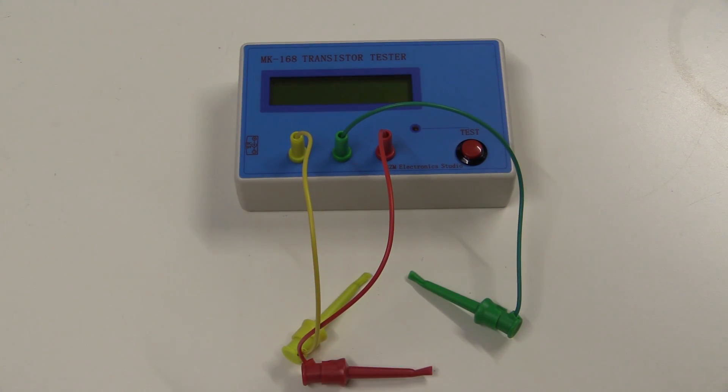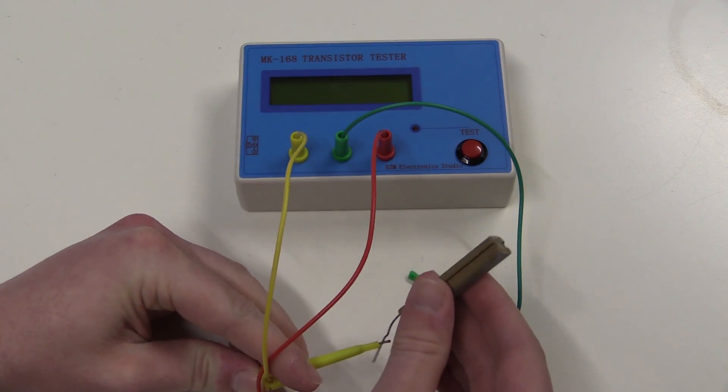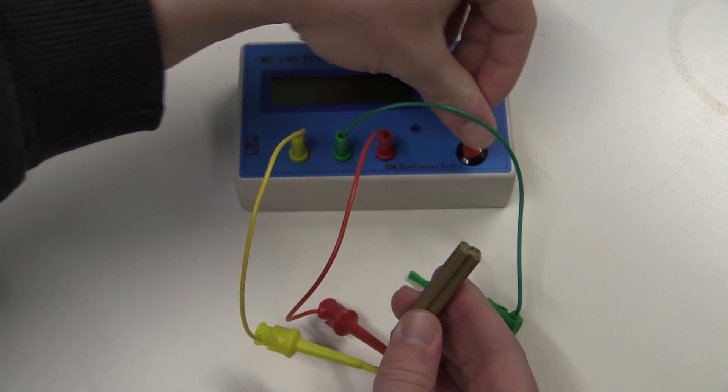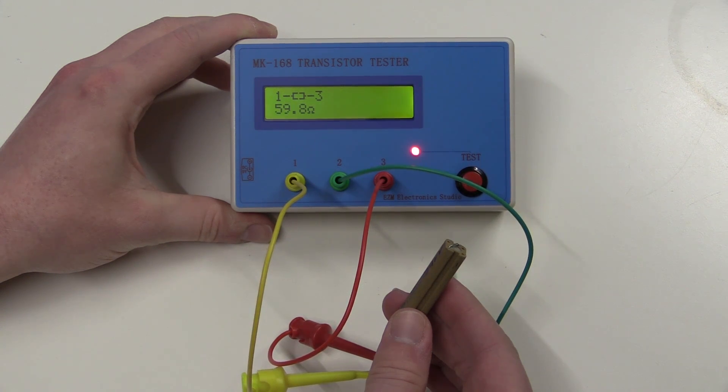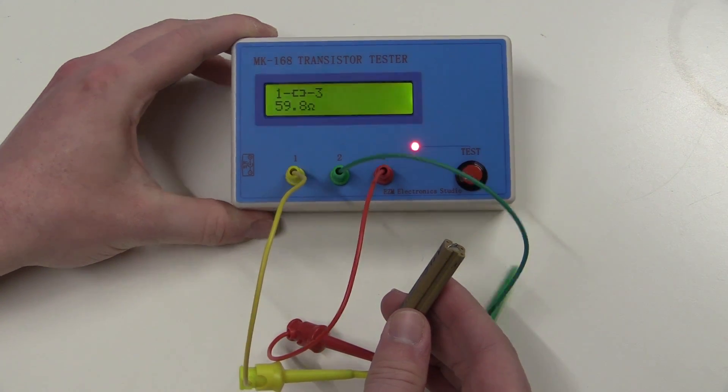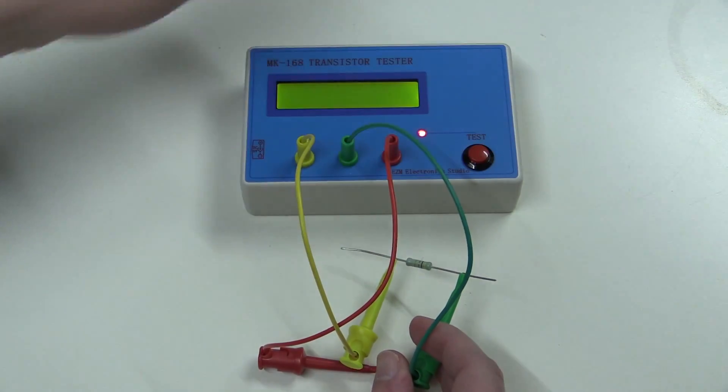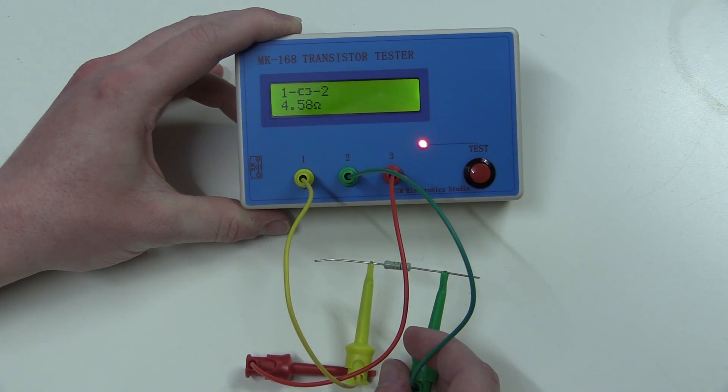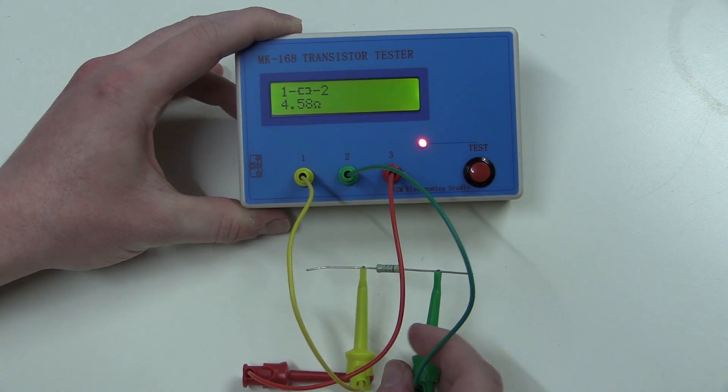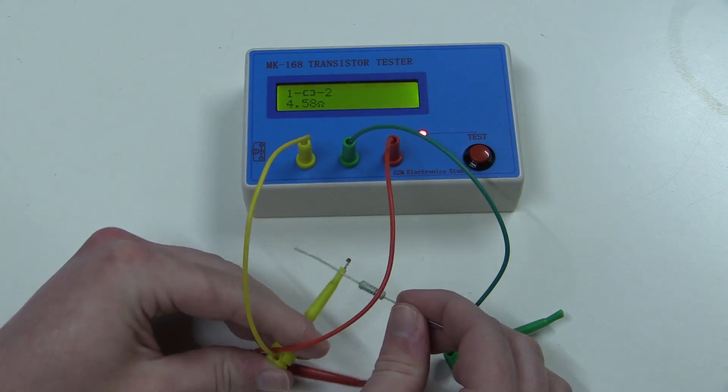Our transistor tester can also test resistors. Let's go ahead and try that out with this high-powered 60 ohm resistor. Let's just hook it up to two random leads. See what it does. 59.8 ohms. And here we have another resistor. Let's see what this one does. Resistor 4.58 ohms. This is supposed to be 4.7 ohms according to the color code.